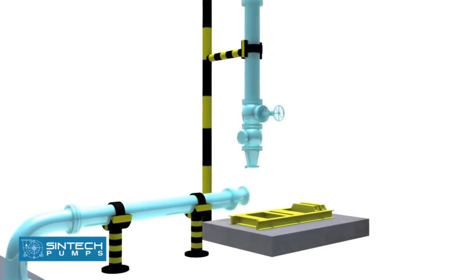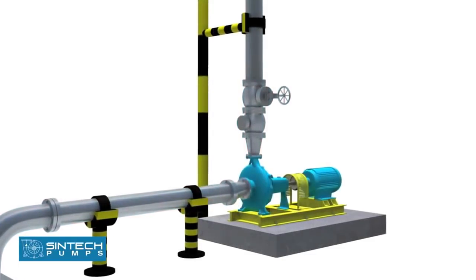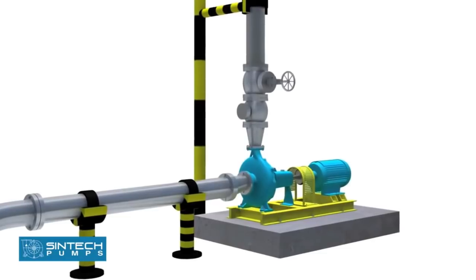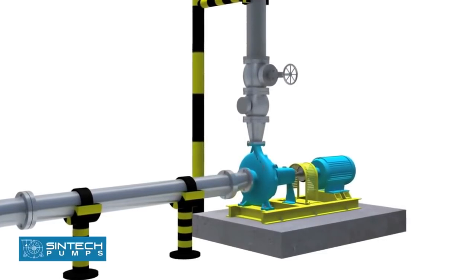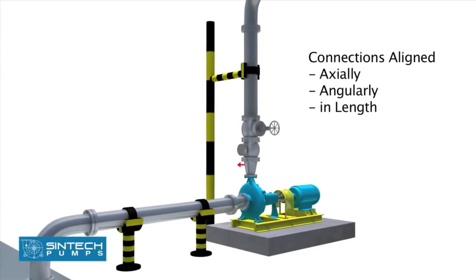When the pipes are not supported, their weight is borne by the pump casing and may cause them to crack or deflect. It is important that the connections be carefully aligned axially and angularly.